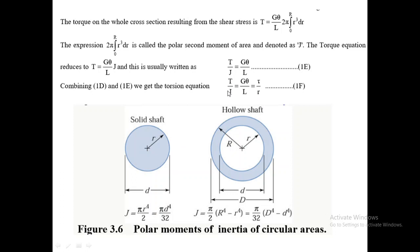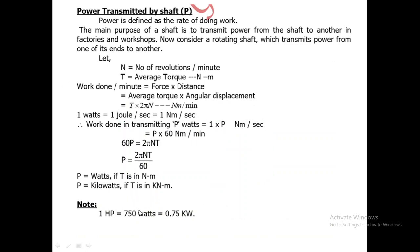Regarding the polar moment of inertia J — it is a geometrical parameter of the cross section of the shaft. For a solid circular shaft, J = π × d⁴ / 32. For a hollow shaft, J = π (D⁴ − d⁴) / 32, where D is the outer diameter and d is the inner diameter. These formulas will be used when solving problems.